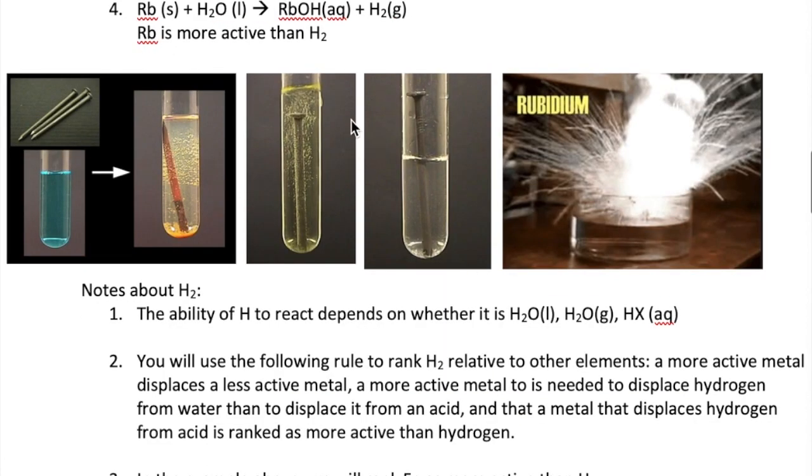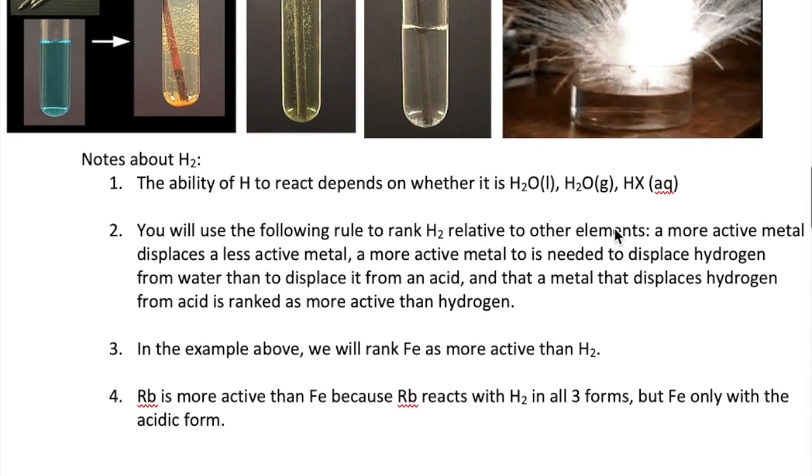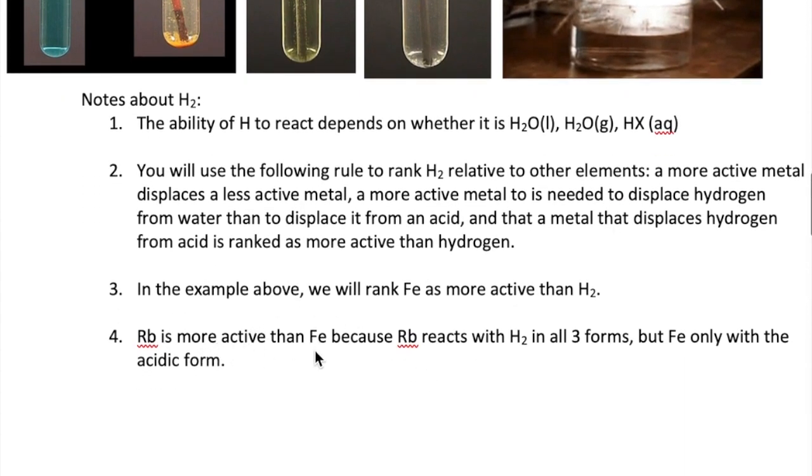The last result I want to discuss with you is when we mix rubidium with water. Here we see a very explosive reaction which produces hydrogen gas. There's so much hydrogen gas and heat produced that the heat causes the hydrogen to react with oxygen from the air surrounding the experiment, resulting in the explosion you observe. Because rubidium reacts with H2 in the liquid water form, it will automatically also react with H2 in the steam form and H2 in the acidic form, since those are more reactive forms of H2. As a result, we can immediately say that rubidium is more active than H2. One last conclusion is that rubidium must also be more active than iron, because rubidium can react with all three forms of H2, whereas iron can only react with the acidic form.